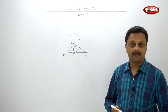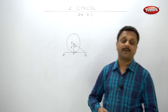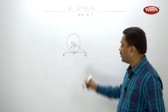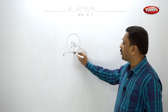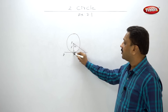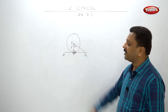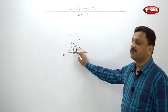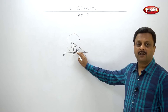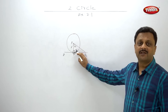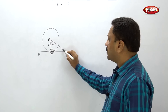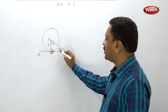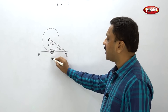This is a very simple example. We know that this is the radius and at this point it is tangent, so this angle is 90 degrees. Since this angle is given as 60 degrees, this is obviously the case of 30-60-90. This is 60, so this has to be 30 because this is 90 degrees.